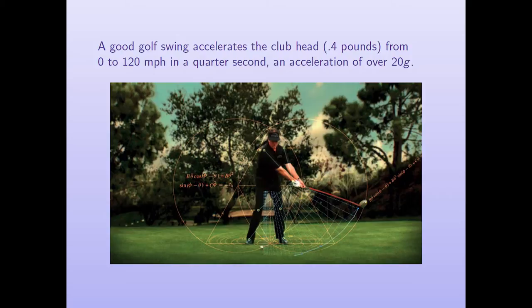A good golf swing accelerates the club head, which is about a half a pound, from zero to 120 miles an hour in a quarter of a second. That's more than 20 Gs of acceleration, and the question is, how do you do that most effectively? So there's Phil swinging, and what you see is that his arms are very straight and rigid, and coming from his arms is the straight shaft of the golf club, and that of course pivots around. He applies a pivot both at his shoulders and with his wrists, and in that way he's able to accelerate the club head from zero to 120 miles an hour in a quarter of a second — way over any sports car.